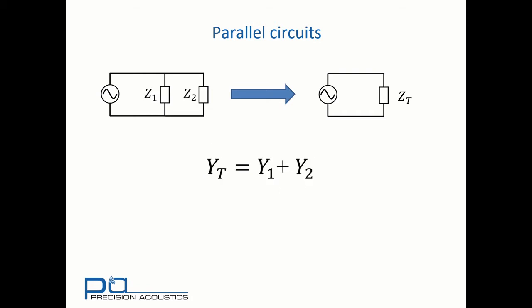This is more conveniently expressed in terms of those admittances. So here we can see that Yt is Y1 plus Y2. And so for that reason, when we're looking at parallel combinations of components, it's often more convenient to use an admittance description of them.